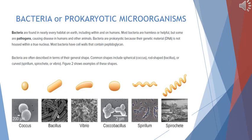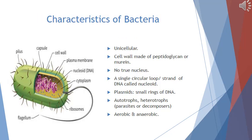Bacteria are unicellular organisms. Their cell wall is made up of peptidoglycan or murein, a complex molecule. There is no true nucleus; only a single circular strand of DNA is present, called the nucleoid. Additional small rings of DNA are also present, known as plasmids, which are used in biotechnology and genetic engineering. Bacteria may be autotrophs — preparing their own food by photosynthesis — or heterotrophs, either as parasites obtaining food from living organisms, or as decomposers obtaining food from dead organic matter. Bacteria may also be aerobic or anaerobic.